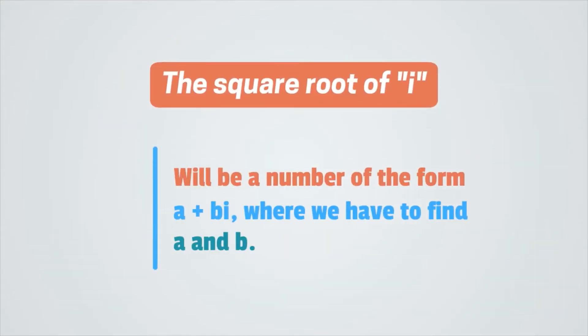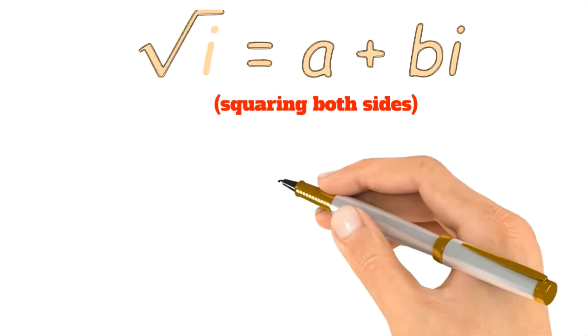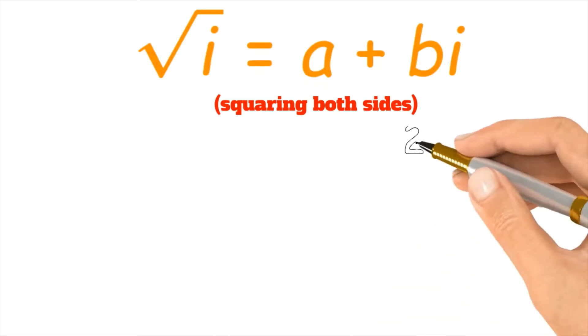The square root of i will be a number of the form a plus bi, where we have to find a and b. In equation form, we have that the square root of i equals a plus bi.